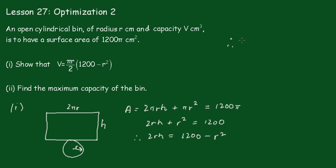Therefore, h equals 1200 minus r squared all over 2r. We can leave it like that, and now we've got what the height is.